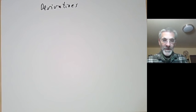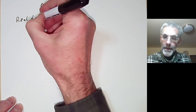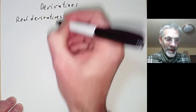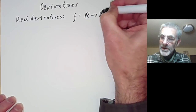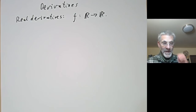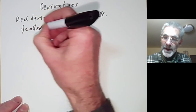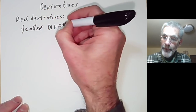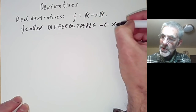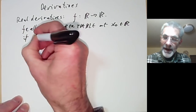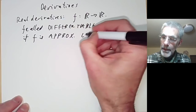In order to explain these, we first recall real derivatives or real differentiation. So here we have a function f from the reals to the reals. What does it mean for f to be differentiable? Well, f is called differentiable at x naught in R if f is approximately linear at this point.